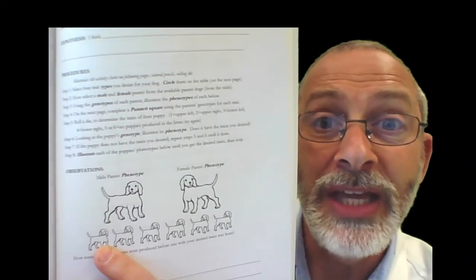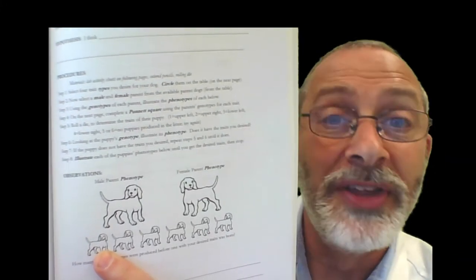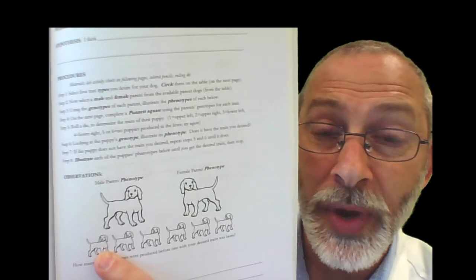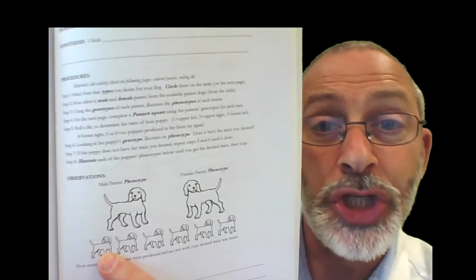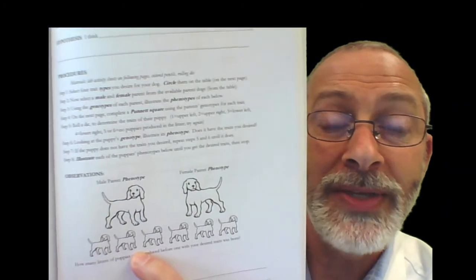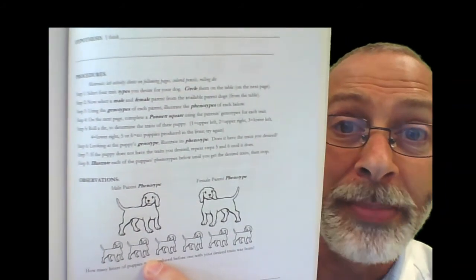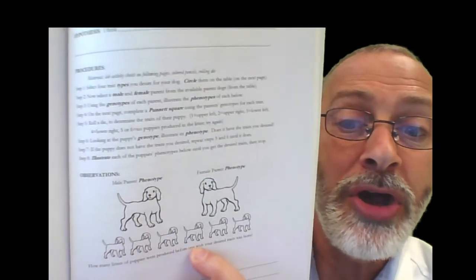Roll the die again for each Punnett square to choose the genotype, and whatever the outcome is, illustrate that with your puppy. And keep on going down the list of puppies using your Punnett squares and the dice each time and see how many generations or how many attempts will it take for those two parents you selected to produce an offspring with the characteristics that you desired at the beginning.